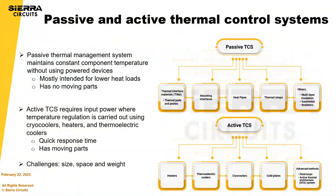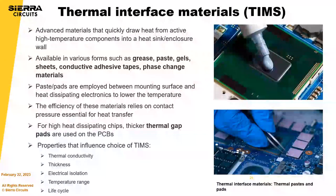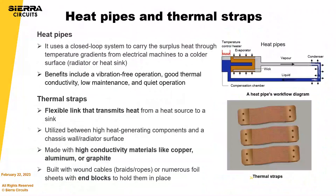There are two kinds of thermal control systems: active and passive. We also have a list of thermal interface materials. You can also use thermal straps and heat pipes. Another option worth mentioning is metal core PCBs, or just having a thicker ground plane, before getting to more exotic solutions.